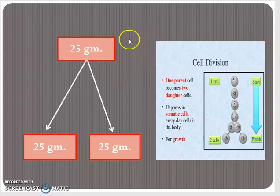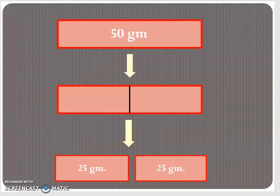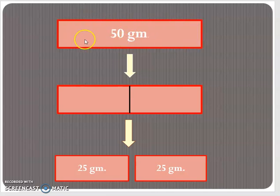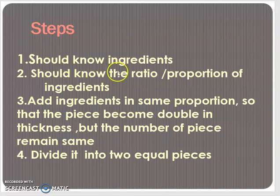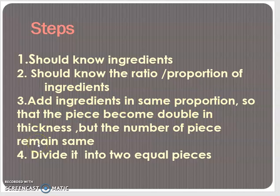Next, we should know in what proportion they are added. After knowing these two things, we will add the ingredients in the same proportion so that the piece becomes double — it will become 50 grams — but the number of pieces should remain the same, that is, 1. The next step is to divide this piece into two equal pieces of 25 grams each. So the steps are: know the ingredients, know the proportion of ingredients, add them in the same proportion so the piece doubles in size, and then divide it into two equal pieces.